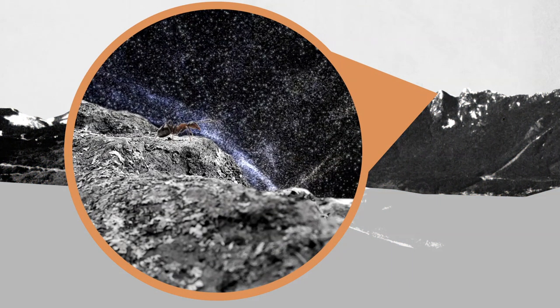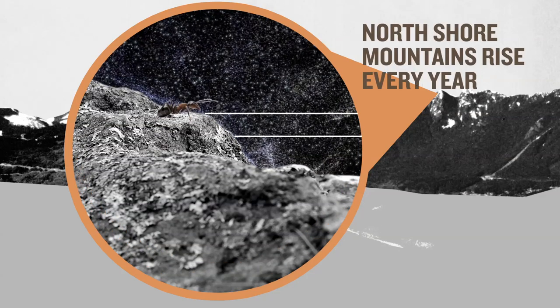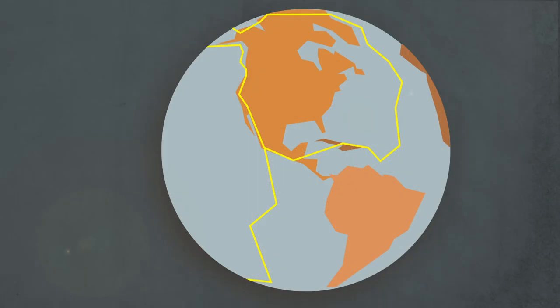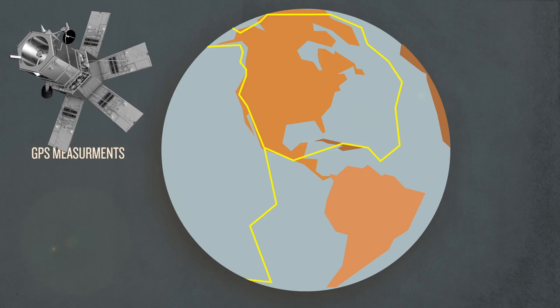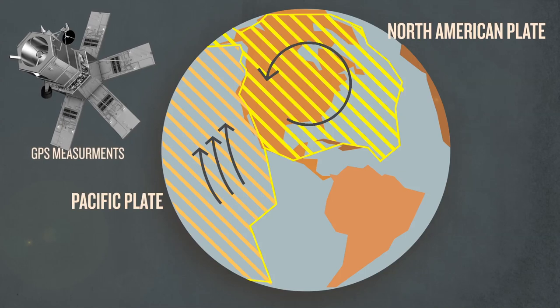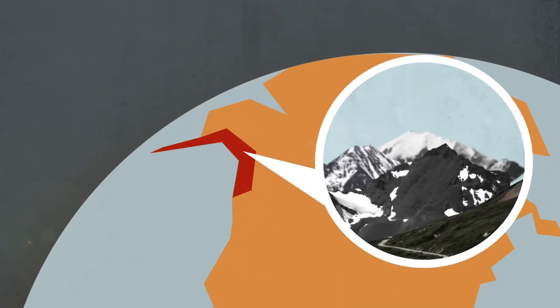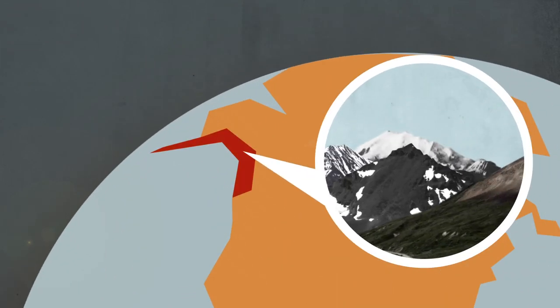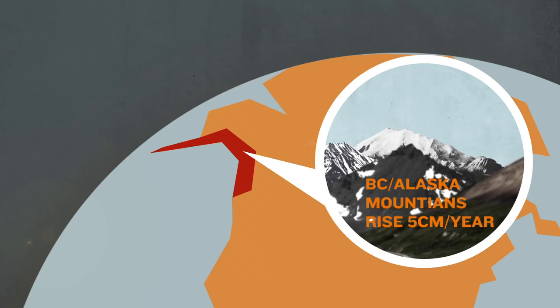Even today, our North Shore mountains rise slightly every year. GPS measurements show North America is turning counterclockwise. The Pacific plate is moving north. An ongoing collision is causing B.C. Alaska mountains to rise 5 centimeters per year.